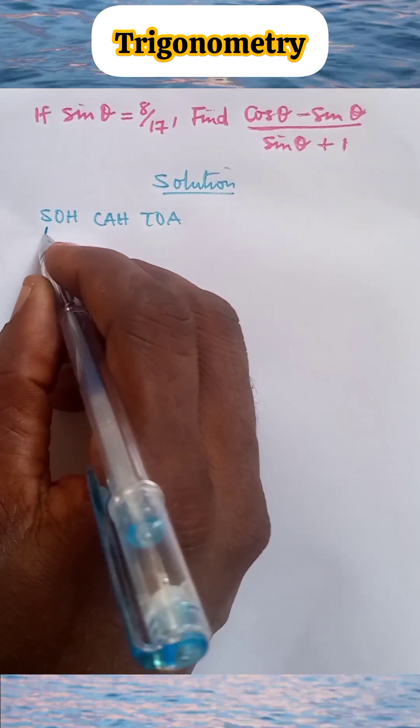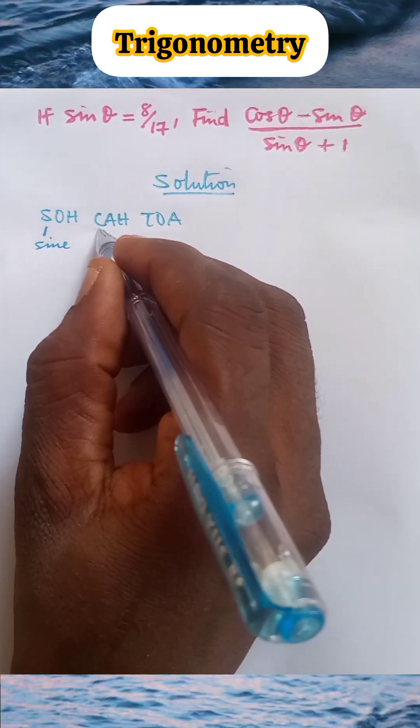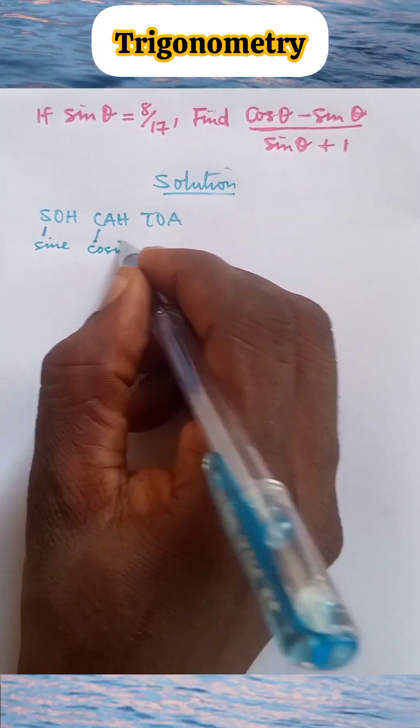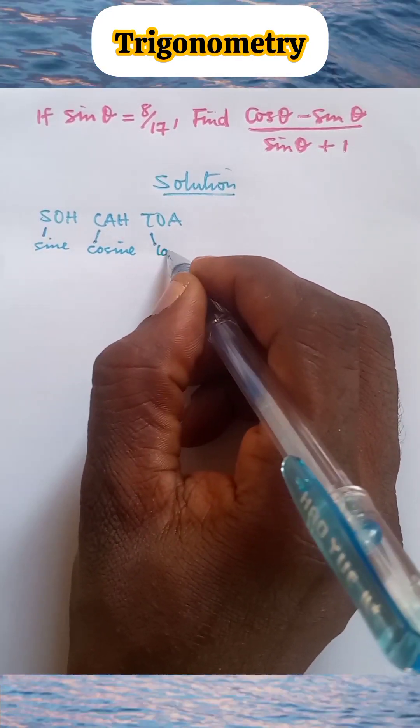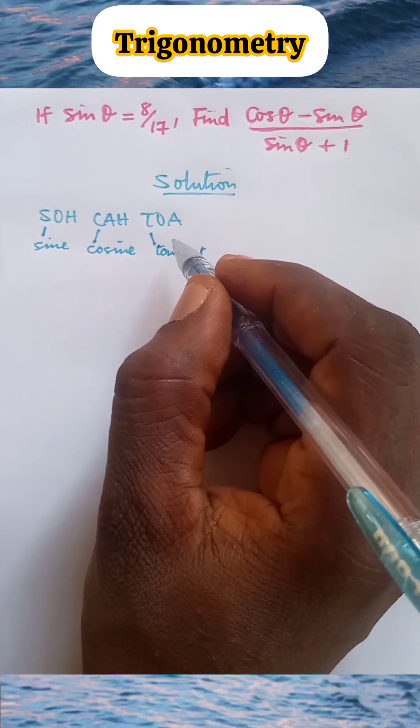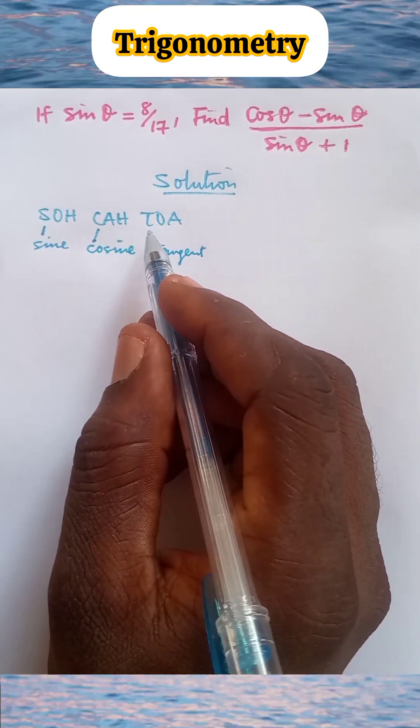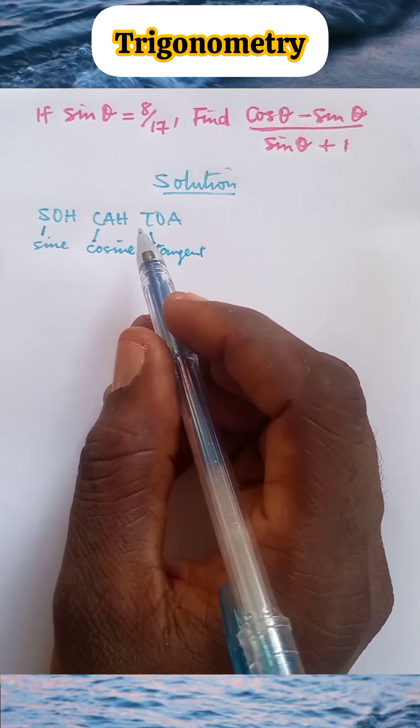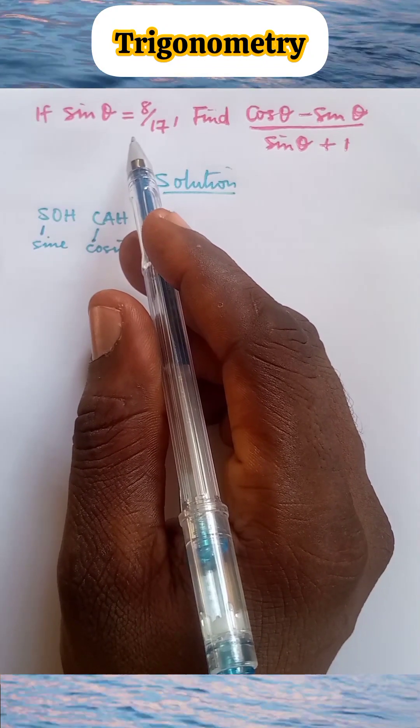Where S stands for sine, C for cosine, and T for tangent. SOHCAHTOA is applicable to right angle triangles, and so we are going to represent this in a right angle triangle.